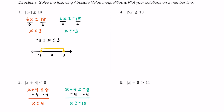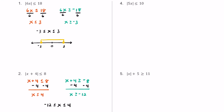For number 4, let's separate this out. We can say 5x is less than or equal to 10 for one inequality, and the other is 5x is greater than or equal to negative 10. Let's isolate x by dividing by 5 on both sides. On the left, x is less than or equal to positive 2. On the right, dividing by 5 gives us x is greater than or equal to negative 2.